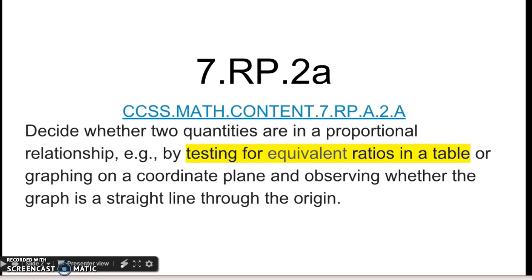This is set into four different substandards, so we're going to look at substandard 7.RP.2a first. Decide whether two quantities are in a proportional relationship, for example, by testing for equivalent ratios in a table or graphing on a coordinate plane and observing whether the graph is a straight line through the origin.